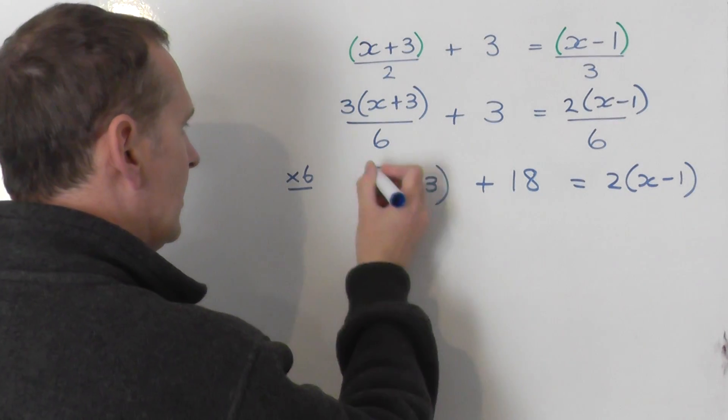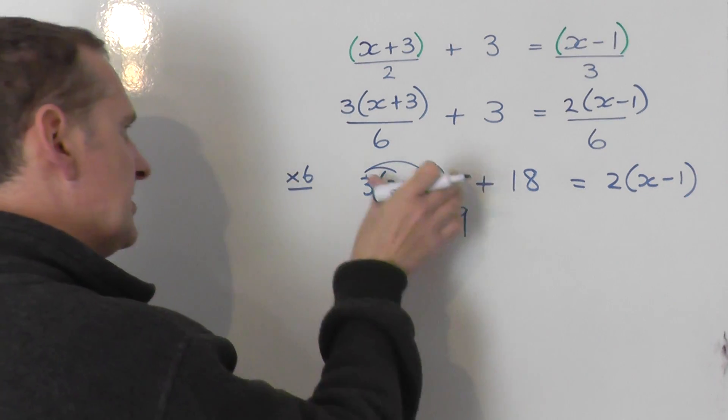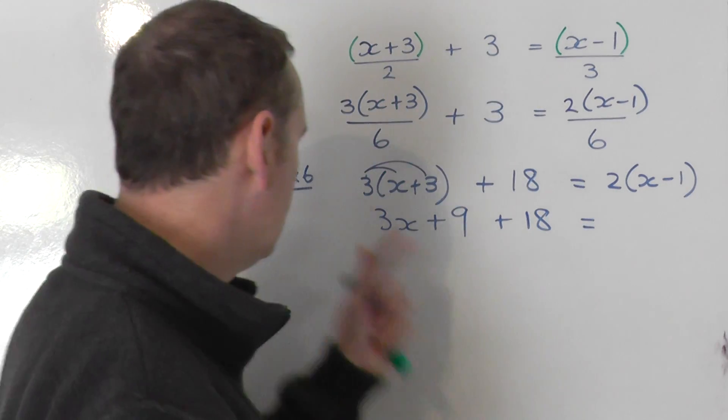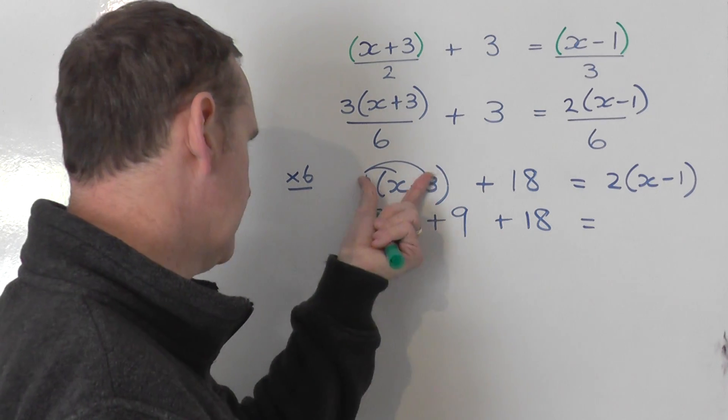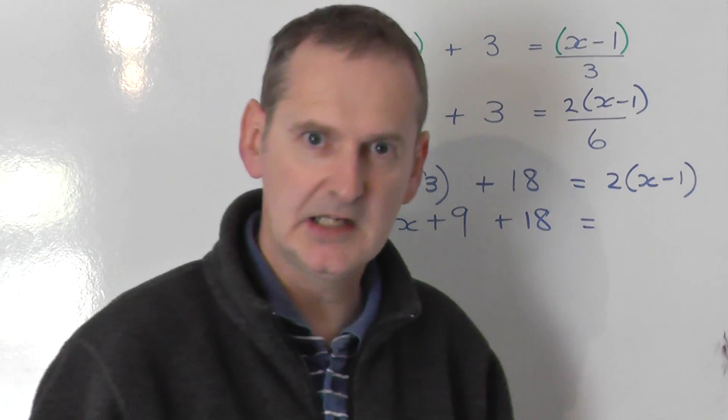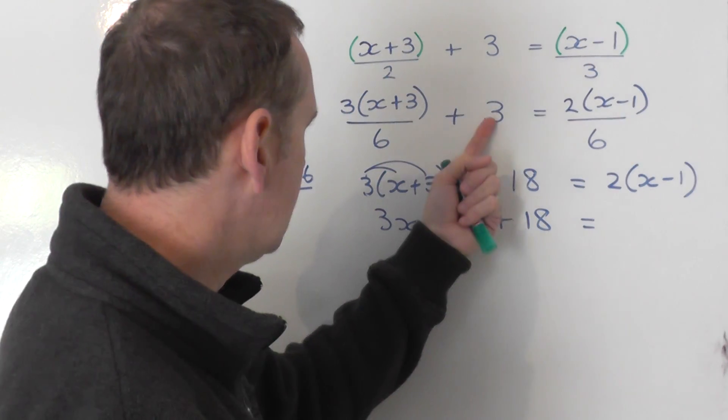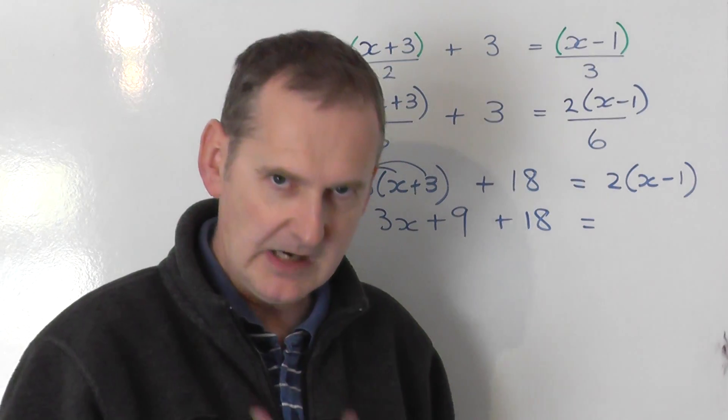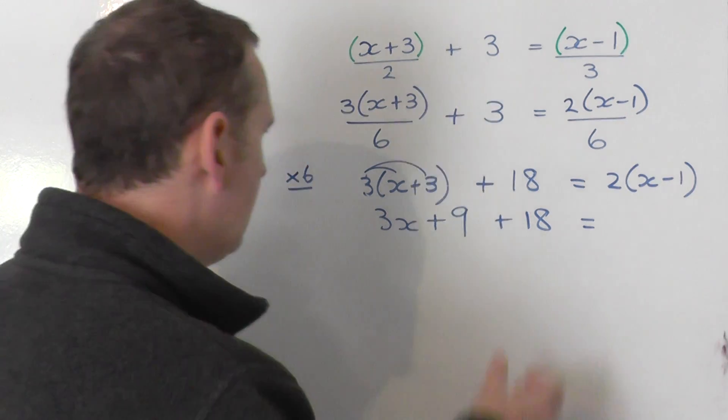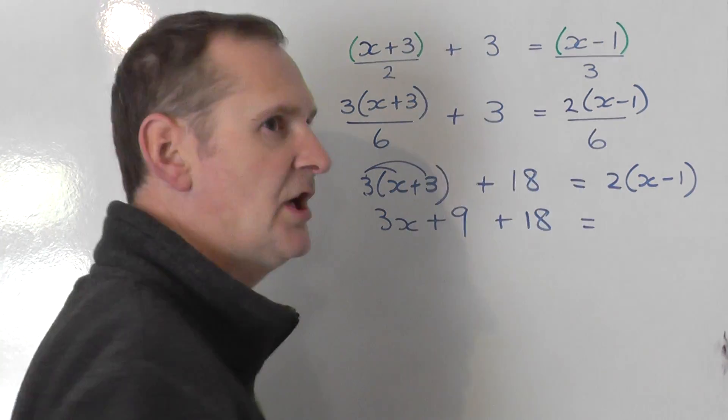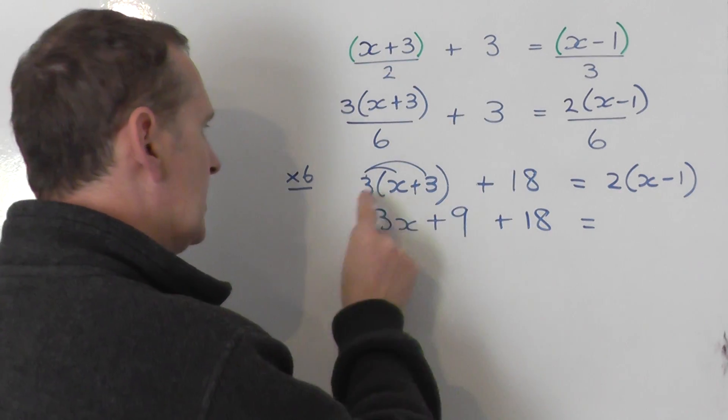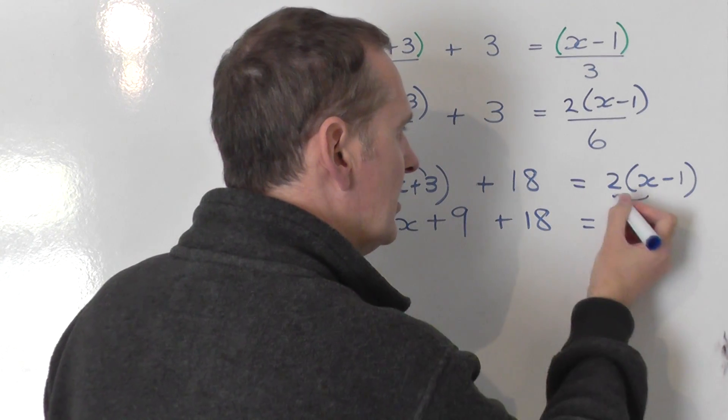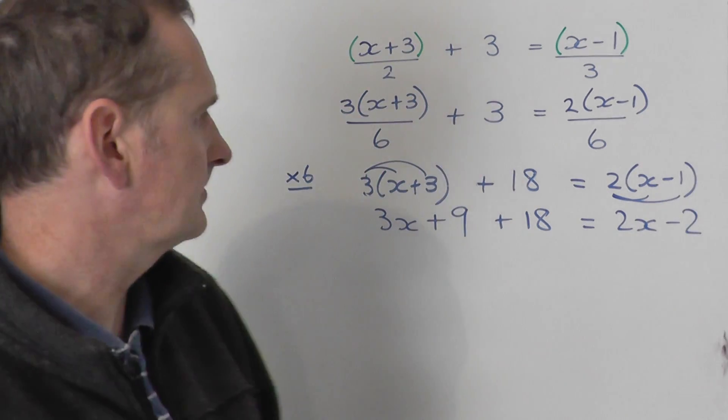3 times x is 3x. 3 times plus 3 is plus 9. So that is the same as that. Leave the plus 18 unchanged. That does not get multiplied by anything. We've just said 3 times that, 3 times that. So that's the same as that. The plus 18 is exactly the same. Unchanged in this line. In the last line, we changed it from plus 3 to plus 18, because we were multiplying everything by 6. So you've just got to be very confident about what is going on, so you know that times it by 6 is there, but it remains unchanged for this line here. So 3 times x, 3x. 3 times 3 is 9. That's the same as that. That remains the same. Now expand this. 2 times x is 2x. 2 times minus 1 is minus 2. So we get that.